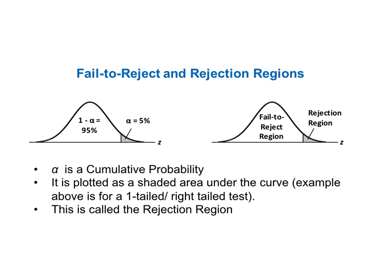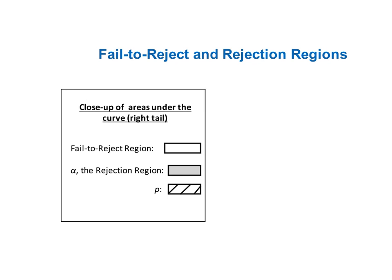In visualizing the concept of P, it may help to look at graphs of fail to reject and rejection regions. Here we have the standard normal distribution, which is the probability distribution of the test statistic Z. Alpha is a cumulative probability — its value is selected by the person performing the test and is plotted as a shaded area under the curve. This example is for a right-tailed test, so alpha is plotted under the right tail of the curve. This is the rejection region, and the unshaded area outside of alpha is called the fail to reject region.